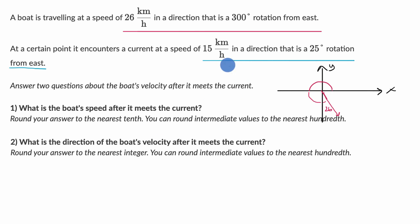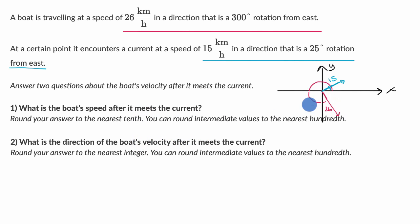And then this other vector, which is the current — 15 kilometers per hour in a direction that has a 25 degree rotation from east — so a 25 degree rotation might be something like this. It's going to be shorter, about 15 kilometers per hour, roughly about that long. We can visualize what the boat's speed and direction will be after it meets the current: it's going to be the sum of these two vectors. We put the tail of one at the head of the other, and shift the blue vector to the head of the red vector. So our resulting speed after it meets the current would look something like this.